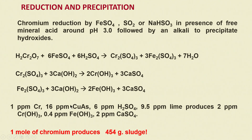If you convert all these quantities into molar concentrations, you will find that one mole of chromium produces 454 grams of total sludge, of which chromium is only a small component. So chromium reduction followed by hydroxide precipitation is always a losing proposition if you want to convert it into chromium hydroxide for disposal.